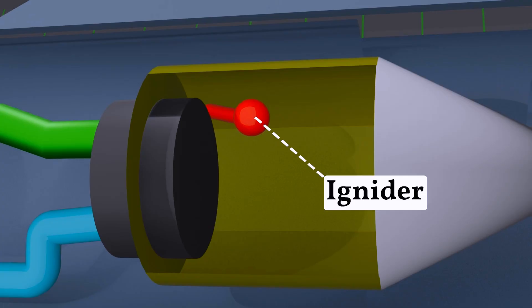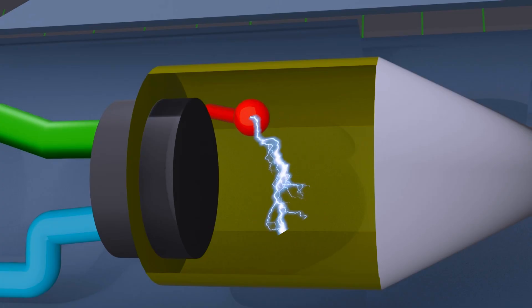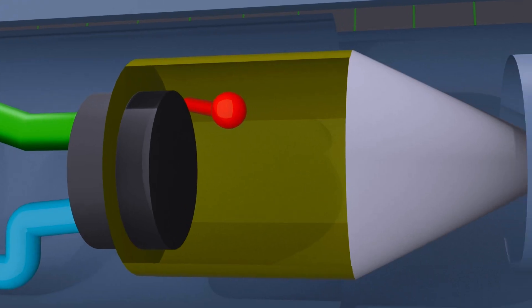And this is the igniter. High-voltage electricity is supplied to the igniter, which creates a spark. Because of that spark, the fuel inside the combustion chamber starts to ignite and blast.